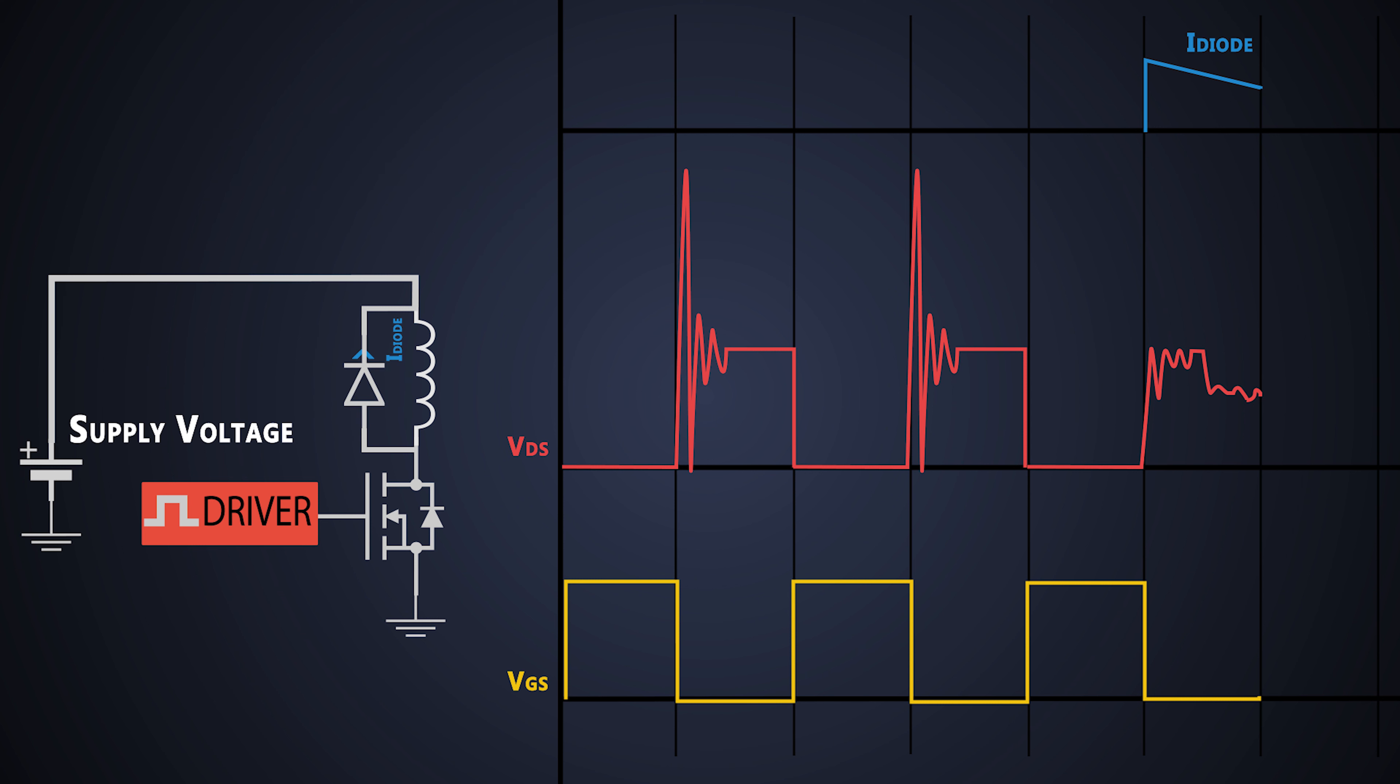We understood why we need a diode for an inductive load to control it. But when we use this diode, it adds some limitation in our circuit as well. Let's say now the MOSFET is turned off. If we need to turn on the MOSFET again, this diode exhibits some strange characteristics.